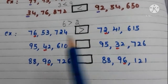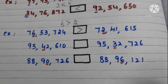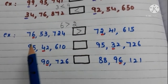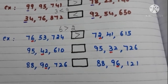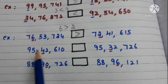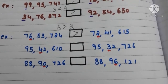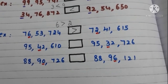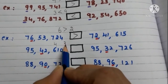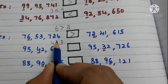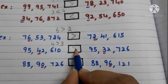Let us go to another example. The digits in these 2 numbers are equal. So compare the highest place value digit. Here 9 is there, and here 9 is there — both are equal. Go to the next highest place value digit. Here 5 is there, and here also 5 is there — both are equal. So compare the next highest place value digit. Here 4 is there, here 3 is there. 4 is greater than 3. So this number is greater than this number.